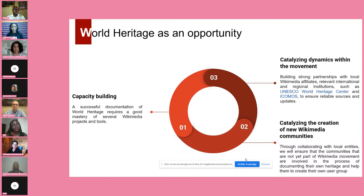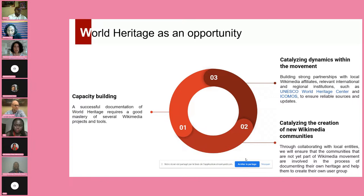World Heritage is a good catalyzer of dynamics within the movement because it is constituted of components of the same nature — cities, archaeological sites, buildings — found in many countries simultaneously. This can trigger collaborations between different Wikimedia affiliates and with organizations such as the UNESCO World Heritage Center and ICOMOS. Because World Heritage exists even in countries without Wikimedia affiliates, it creates occasions to catalyze partnerships through NGOs, enabling locals to learn about Wikimedia and begin creating their own communities.